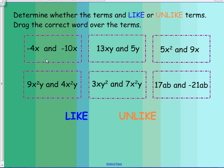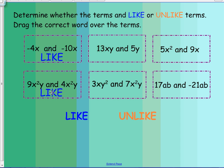The first one: we have negative 4x and negative 10x. We have different coefficients — negative 4 and negative 10 — but we have the same variable x, so they would be like terms. Looking below, we have 9x squared y and 4x squared y. Same idea: we have the same variables with different coefficients, but they are still considered like terms.